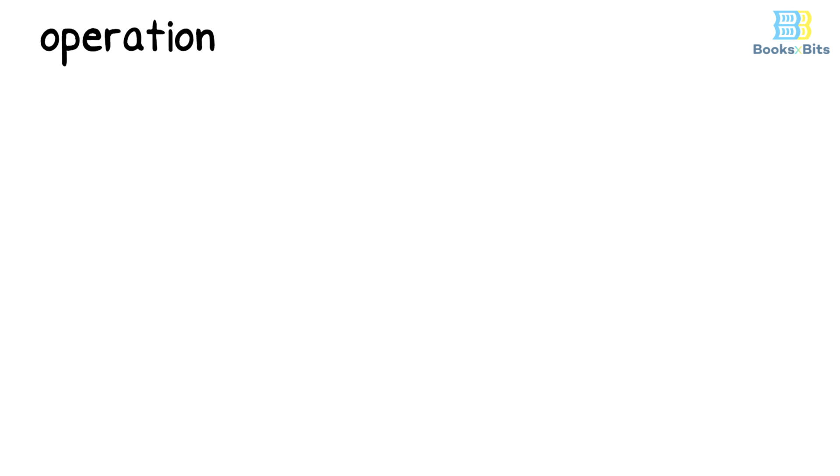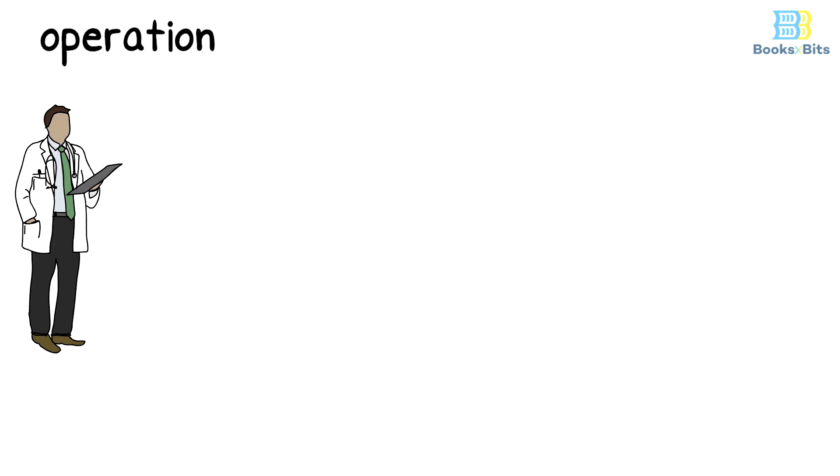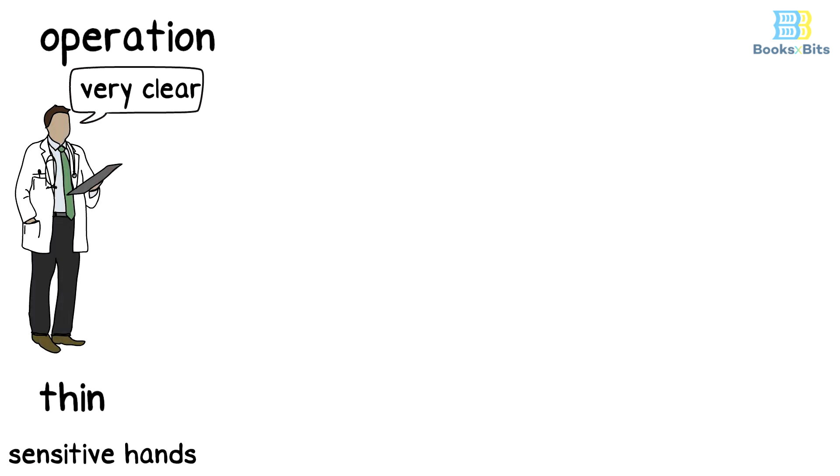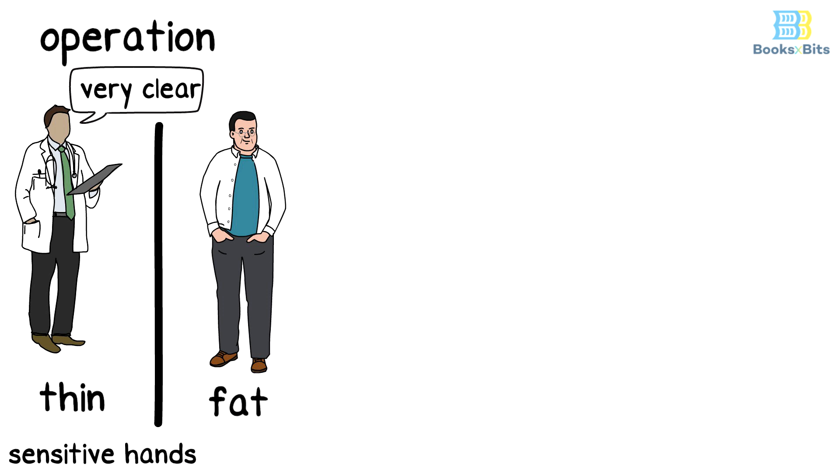Suppose you have to choose between two surgeons to make an operation for you. The look of the first surgeon is familiar for many surgeons, he has a thin structure and sensitive hands, and he's very clear in his speech and appearance. The second surgeon wears normal clothes, he's fat and looks more like a butcher than a doctor. Which one will you choose?